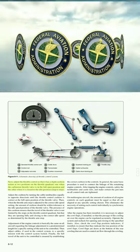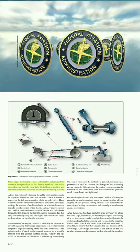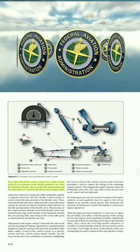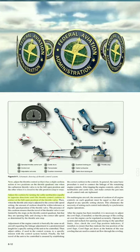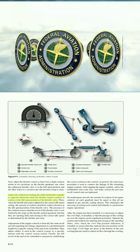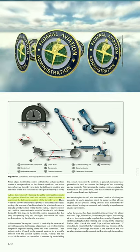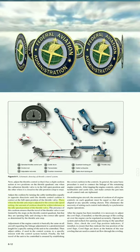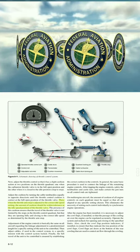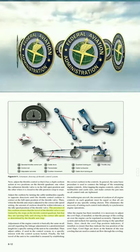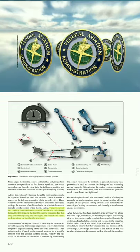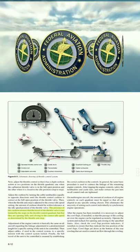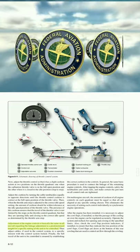Next, adjust the throttle control so that it has a slight cushion action at two positions on the throttle quadrant: one when the carburetor throttle valve is in the full open position, and the other when it is closed to the idle position stop. Adjust the cushion by turning the cable turnbuckles equally in opposite directions until the throttle control cushion is correct at the full open position. The presence of this cushion ensures that the travel of the throttle valve is not limited by the stops on the throttle control quadrant, but that they are opening fully and closing to the correct idle speed as determined by the throttle arm stop.